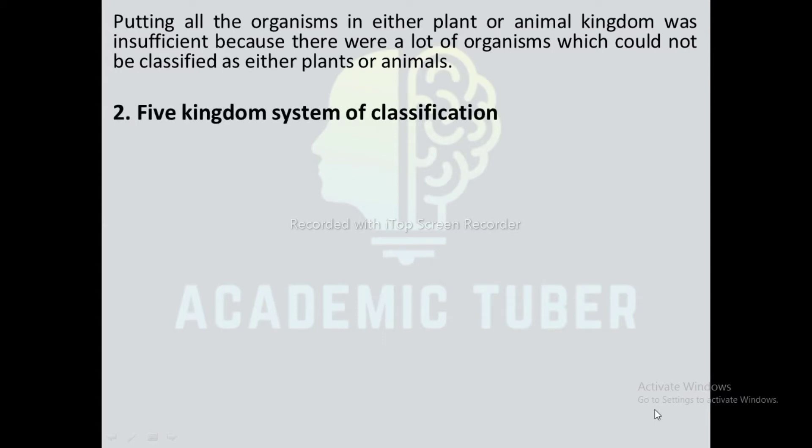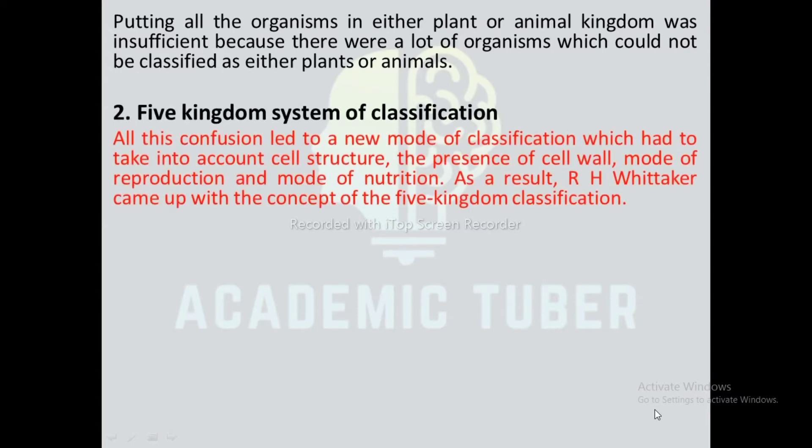Five kingdom system of classification: All these confusions led to a new mode of classification which had to take into account cell structure, the presence of cell wall, mode of reproduction, and mode of nutrition. As a result, R.H. Whittaker came up with the concept of the five kingdom system of classification.